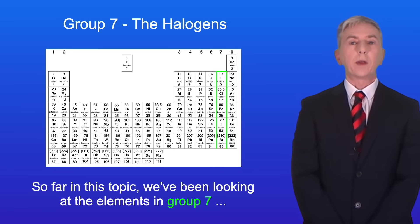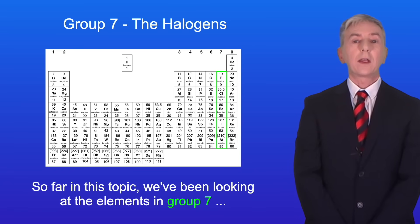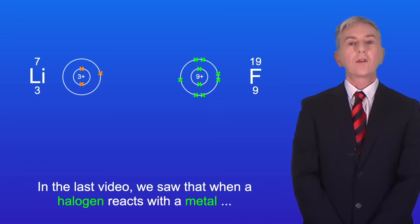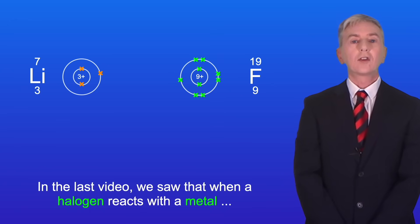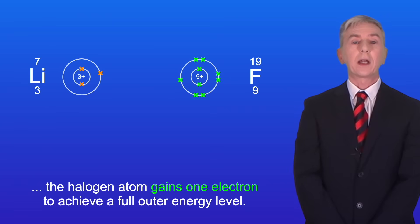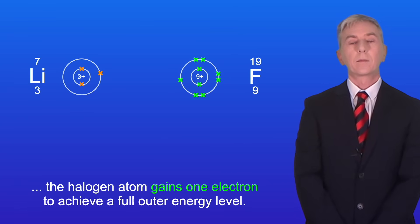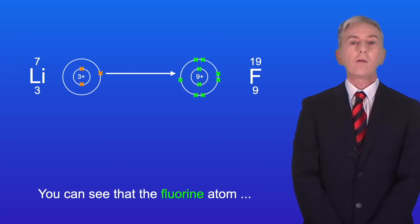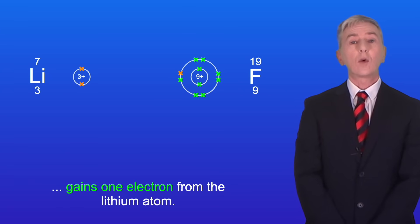So far on this topic we've been looking at the elements in Group 7, which are also called the halogens. In the last video we saw that when a halogen reacts with a metal, the halogen atom gains one electron to achieve a full outer energy level. Here's fluorine reacting with lithium — you can see that the fluorine atom gains one electron from the lithium atom.